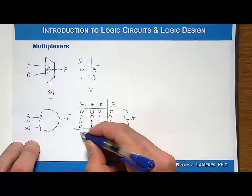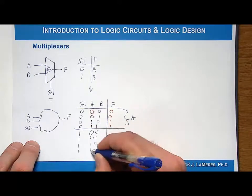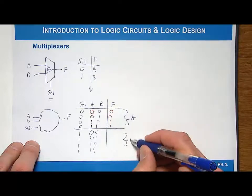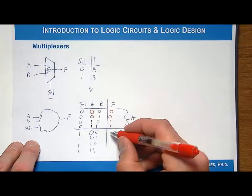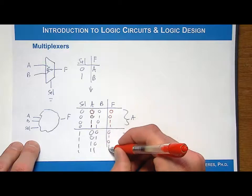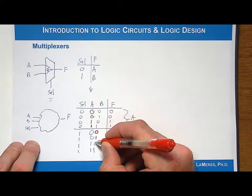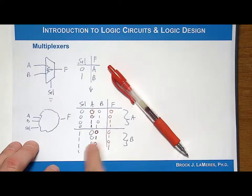Now with select equal to 1, we again enumerate A and B: 00, 01, 10, 11. In this situation the output is going to track B, giving outputs 0, 1, 0, 1, which match whatever B was. So now we have a truth table in standard synthesizable form — binary input codes and one output — which is much easier to implement.